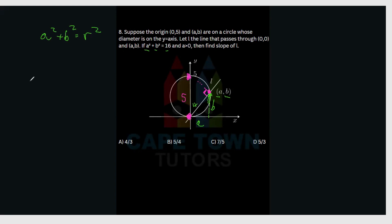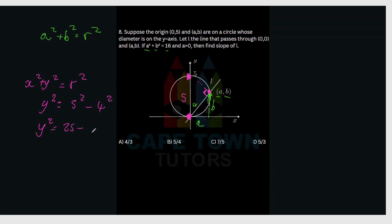So we use x squared plus y squared equals r squared. Our r squared, which is the hypotenuse, would be 5. So 5 squared equals y squared plus x squared — we keep y squared and move x squared across: y squared equals 5 squared minus 4 squared, which is 25 minus 16, so y squared equals 9. Taking the square root, y equals 3. So this side is equal to 3.